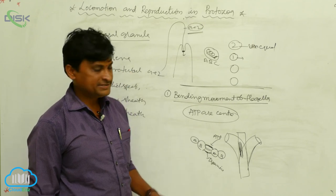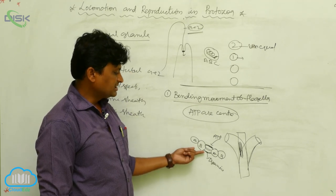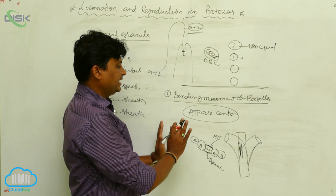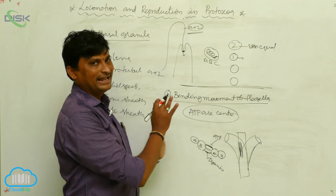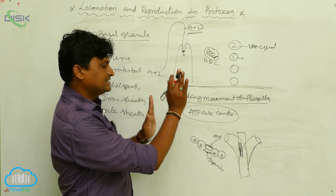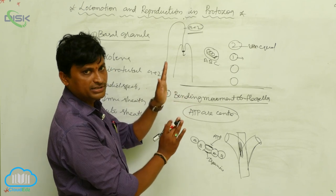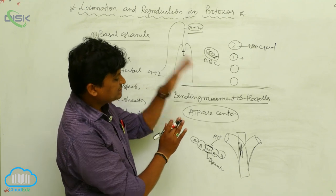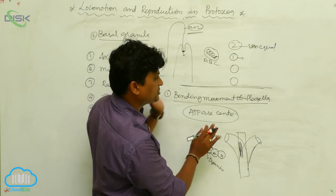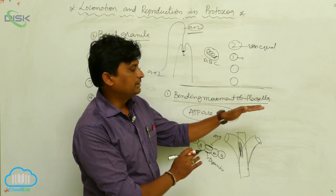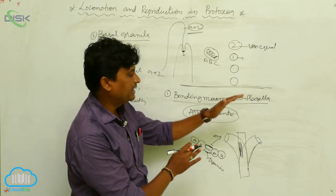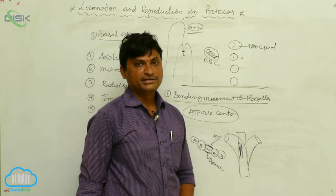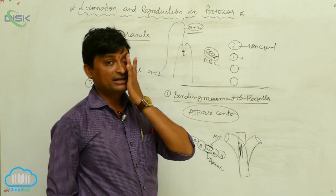The dynein arms utilize ATP, pulling the B tubule so that all dynein arms show sliding movement — one tubule sliding over another. This results in the bending position of the flagella. Afterwards, the flagella returns to normal, and this cycle of bending and recovery constitutes the bending moment of the flagella.